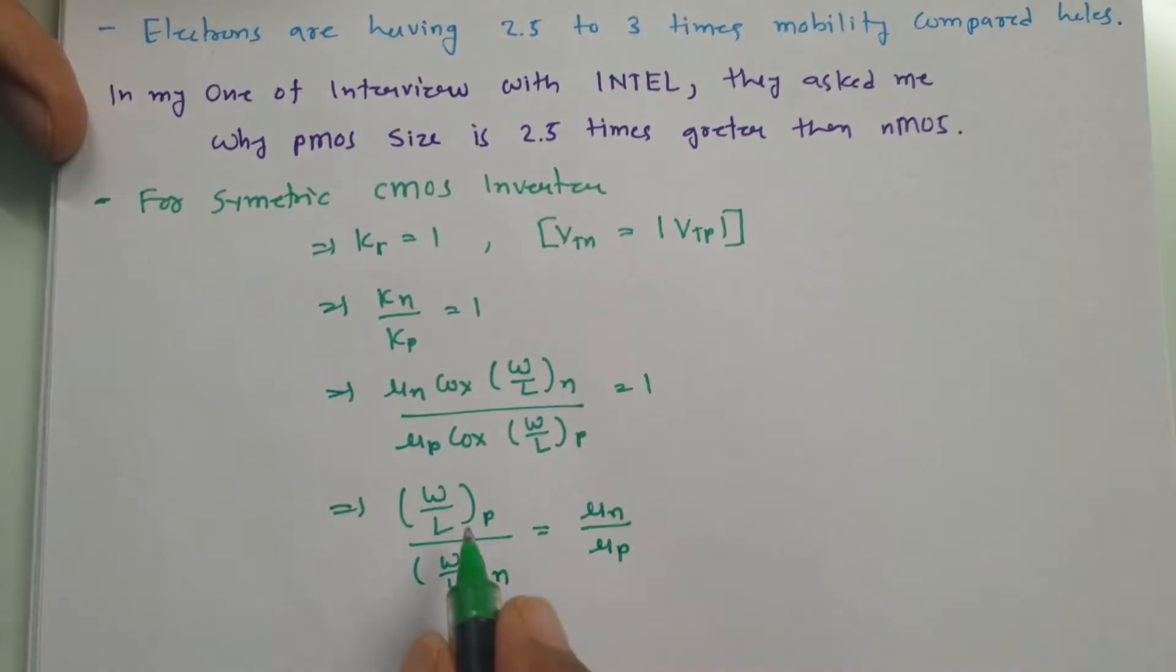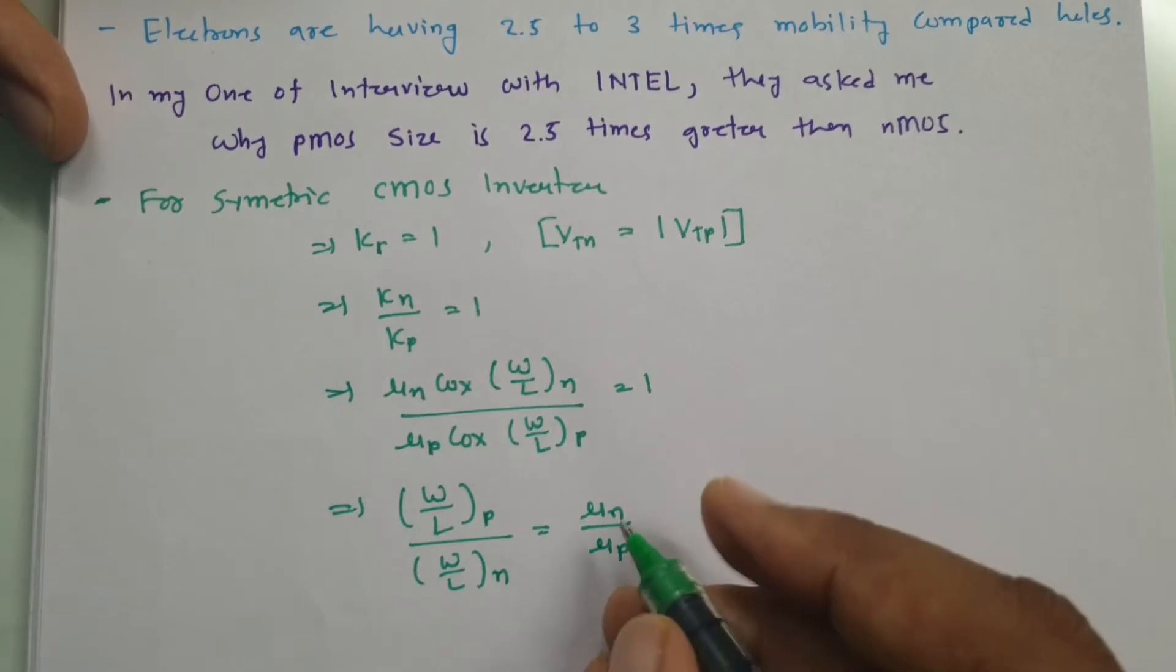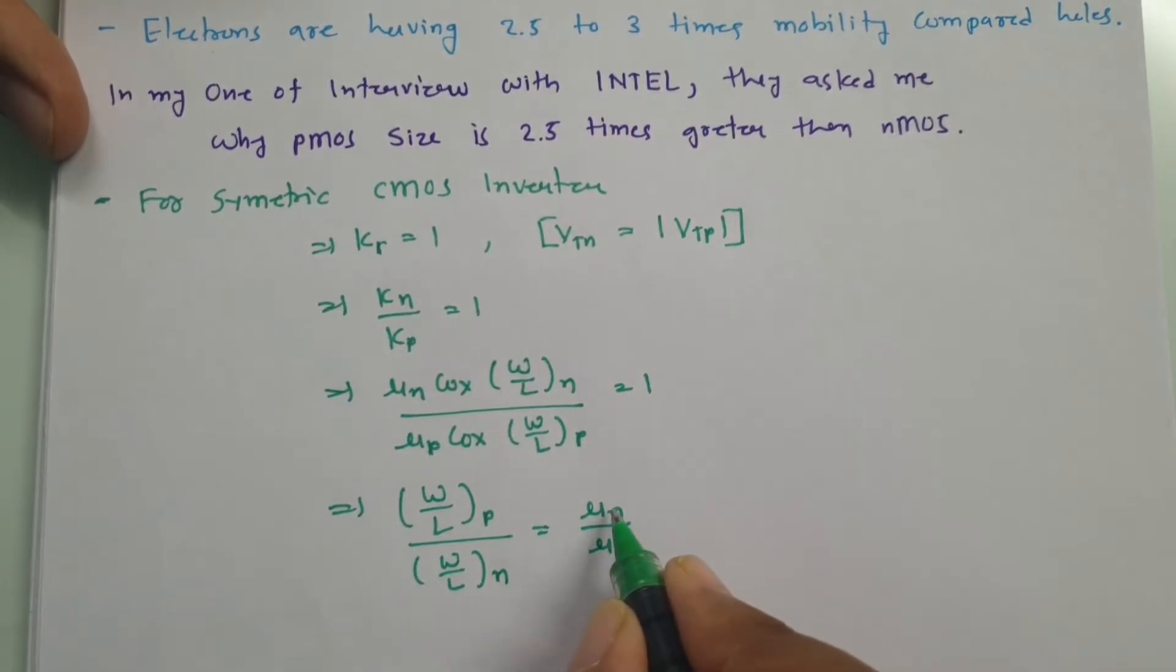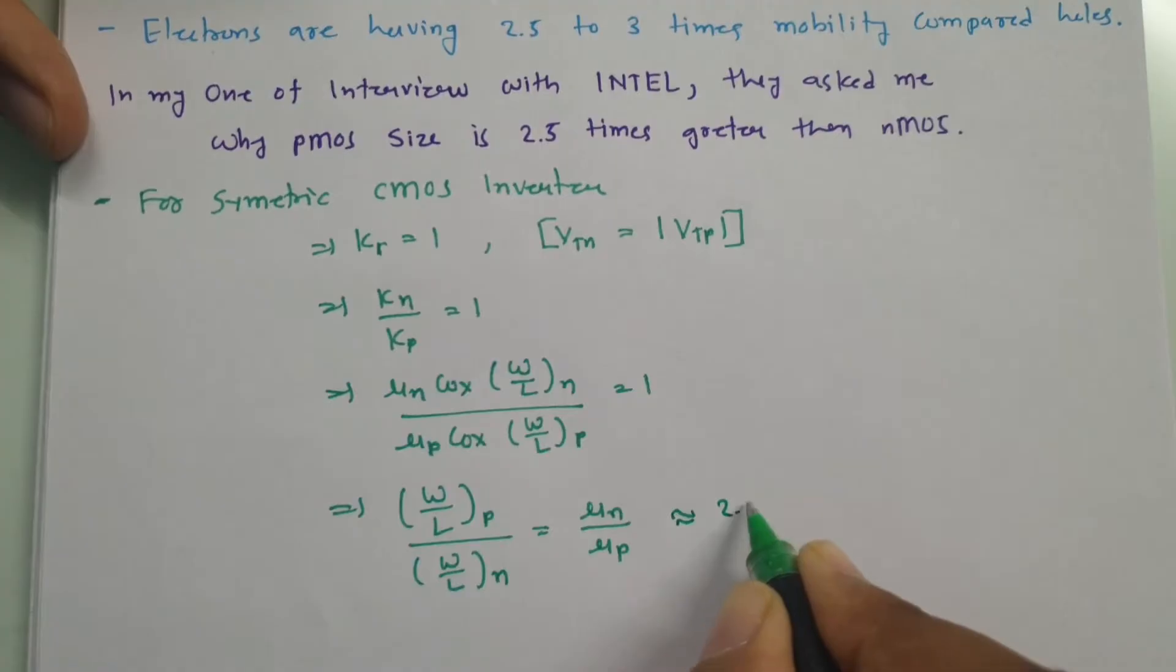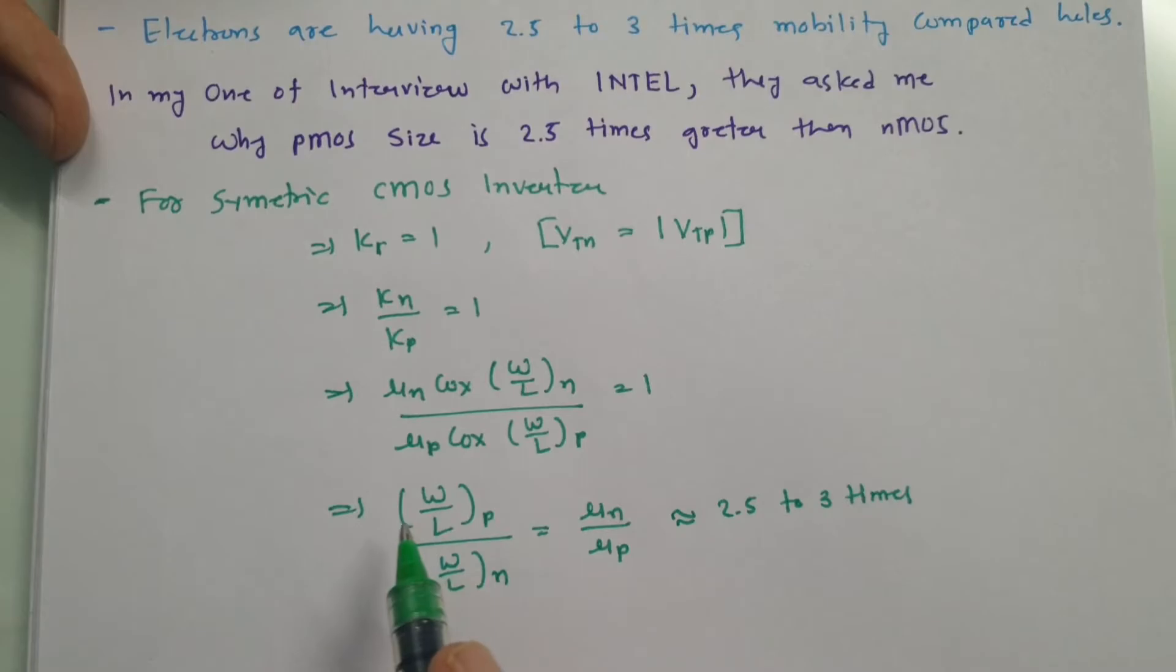Width to length ratio of P type material with respect to N type material, that will be mobility of electrons divided by mobility of holes. As mobility of electrons that is 2.5 times to 3 times greater compared to holes, see, the size which is defined by W by L ratio, which is there with P type material, that is larger compared to N type materials. So that will be 2.5 to 3 times. As mobility of electrons is greater compared to mobility of holes, we can say this size that will be there with PMOS is greater compared to NMOS.